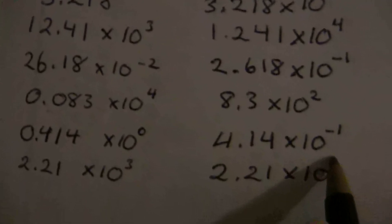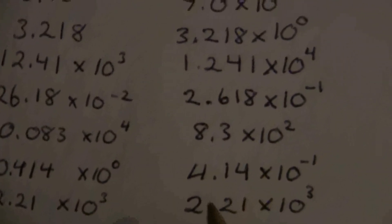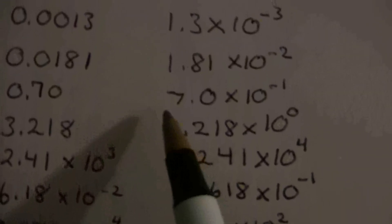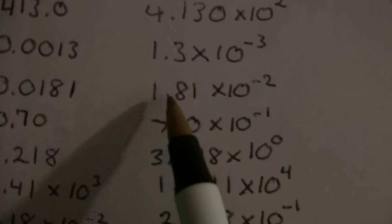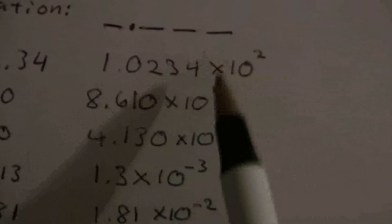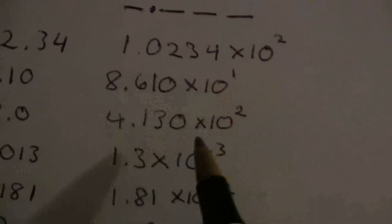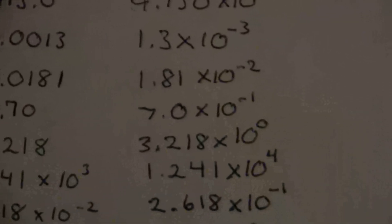So you'll notice with all of these, we have one digit, and then the decimal, and then whatever remaining digits there are in the number as it was given. And then we put the times ten factor on the end, and we always put a number even if it's zero or one. We always write the exponent. All right, I hope that was helpful.